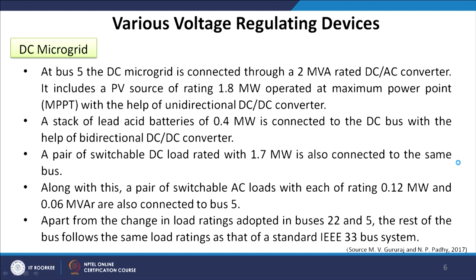Apart from the change in load ratings at bus numbers 22 and 5, the rest of the parameters are similar to the IEEE 33 bus distribution system. The parameters chosen for this analysis need not be fixed variables — they were chosen just for this case study, and you are free to choose your own parameters and carry out a similar simulation.